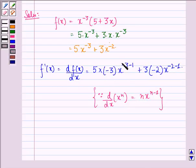So in the simplified form, this can be written as -15x^(-3-1) is -15x^(-4), and -6x^(-2-1) is -6x^(-3).